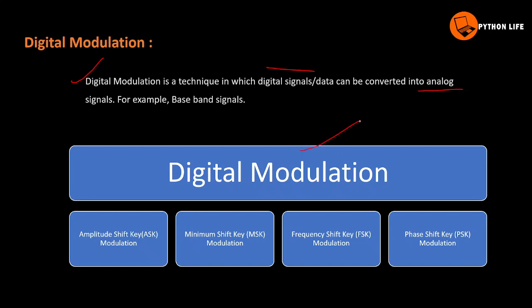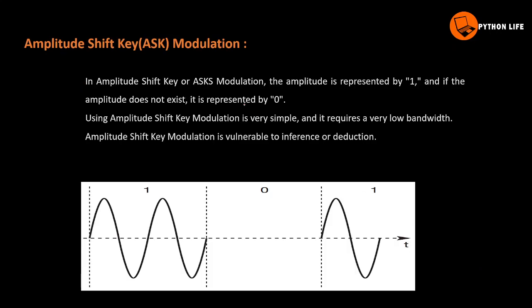There are four types available: mainly Amplitude Shift Keying (ASK), Minimum Shift Keying (MSK), Frequency Shift Keying (FSK), and Phase Shift Keying (PSK). In Amplitude Shift Keying or ASK modulation, the amplitude is represented by one, and if the amplitude does not exist, it is represented by zero.